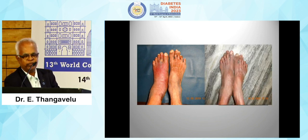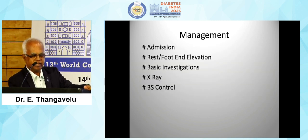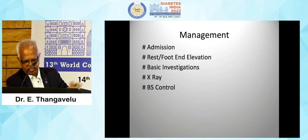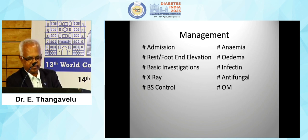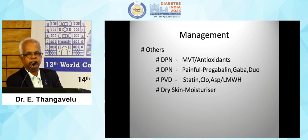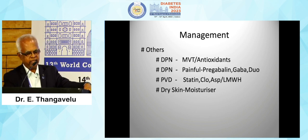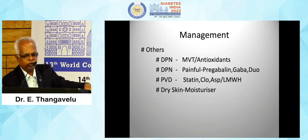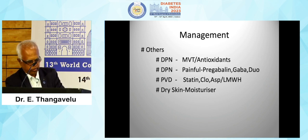In summary, management includes: admission, foot-end elevation, basic investigations, X-ray, blood sugar control, anemia correction, edema or swelling correction, infection management, antifungal and osteomyelitis treatment. Other management includes multivitamins, antioxidants, and for severe painful diabetic neuropathy: pregabalin, gabapentin, or duloxetine. For peripheral vascular disease: statins, clopidogrel, aspirin with low molecular weight heparin. For dry skin, use moisturizer.